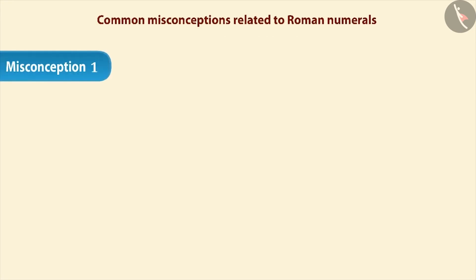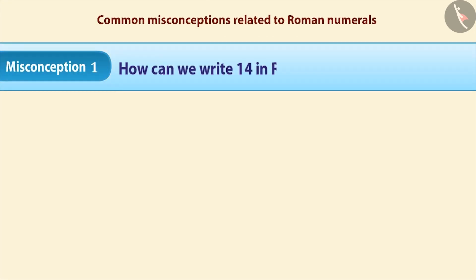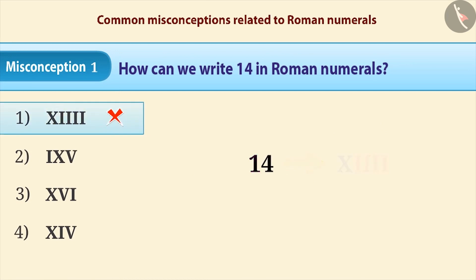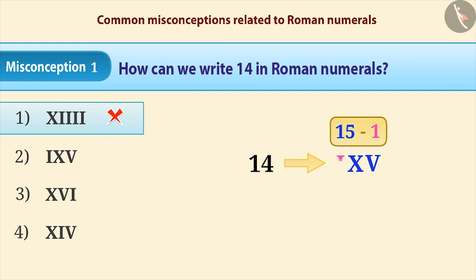Misconception 1: How can we write 14 in Roman numerals? Due to lack of proper understanding of rules, the symbol of 1 is repeated 4 times — this is a misunderstanding. Similarly, 14 is sometimes expressed as the symbol of 5 along with the symbol of 10, which together makes 15, and then to subtract 1, the symbol of 1 is written before the symbol of 10. This way of writing is incorrect.